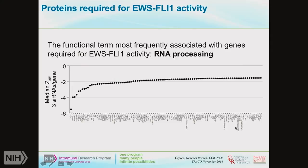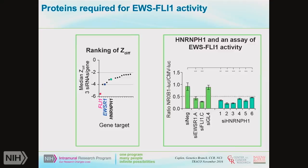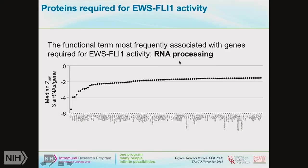We can take the luciferase value and subtract the CMV value. Anything with a Z-difference less than one we consider as reducing EWS-FLI1 activity specifically. Rather to our surprise, we found that the functional term most frequently associated with genes required for EWS-FLI1 activity was RNA processing. This is something to bear in mind when conducting screens on this scale — whether a compound screen, CRISPR screen, or RNAi screen — you need to stay as unbiased as possible for as long as possible.